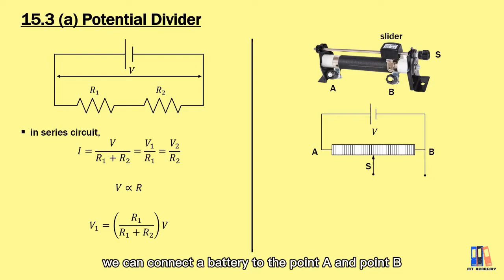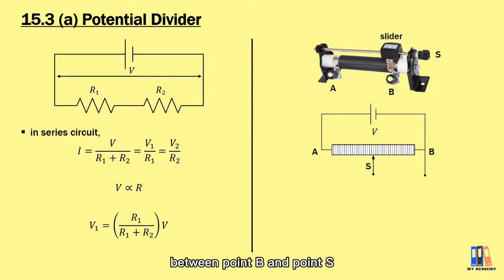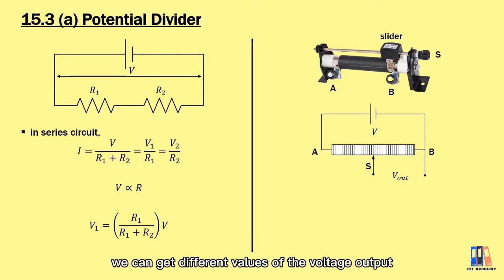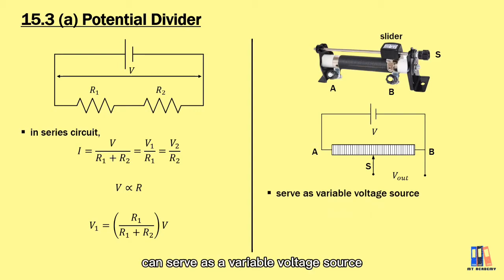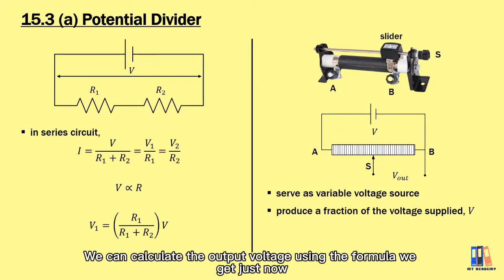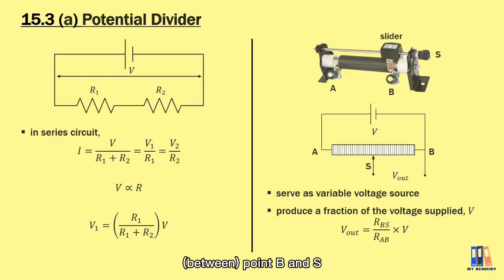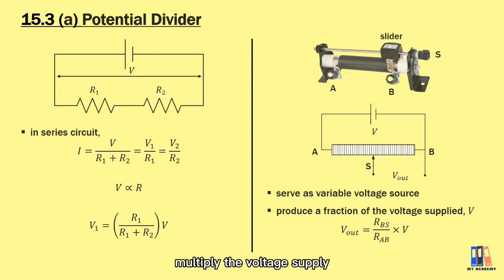With the rheostat, we can connect a battery to point A and point B, then move the slider between point A and point B to get different values of resistance between point B and point S, based on the position of the slider. This gives us different values of voltage output. The potential divider can serve as a variable voltage source — it can produce a fraction of the voltage supply. We calculate the output voltage using the formula equal to the ratio of the resistance at points B and S to the total resistance of the rheostat, multiplied by the voltage supply.